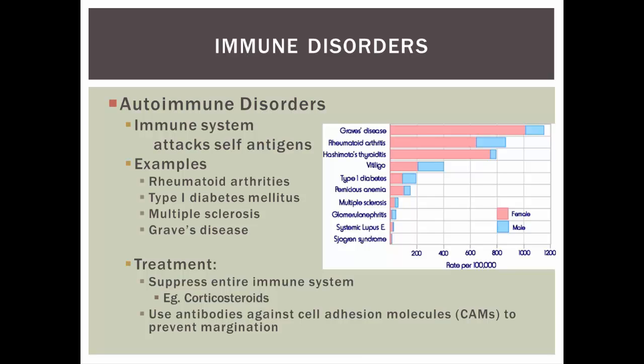As far as immune disorders go, there are autoimmune disorders — basically when the immune system attacks itself. Examples include rheumatoid arthritis, diabetes, multiple sclerosis, and Graves' disease. They are more prevalent in women than in men for some reason, not quite exactly known why. Treatment usually involves suppressing the immune system using corticosteroids, which reduces the likelihood of immune cells attacking yourself. We can also use antibodies against cell adhesion molecules so that white blood cells don't know where to exit the blood and therefore we can reduce inflammation.